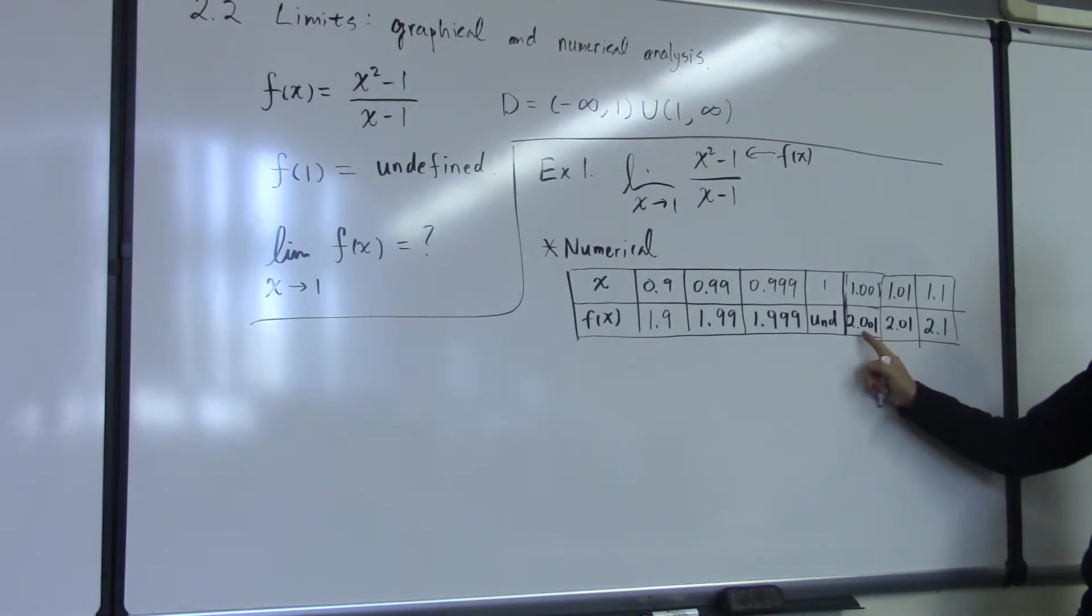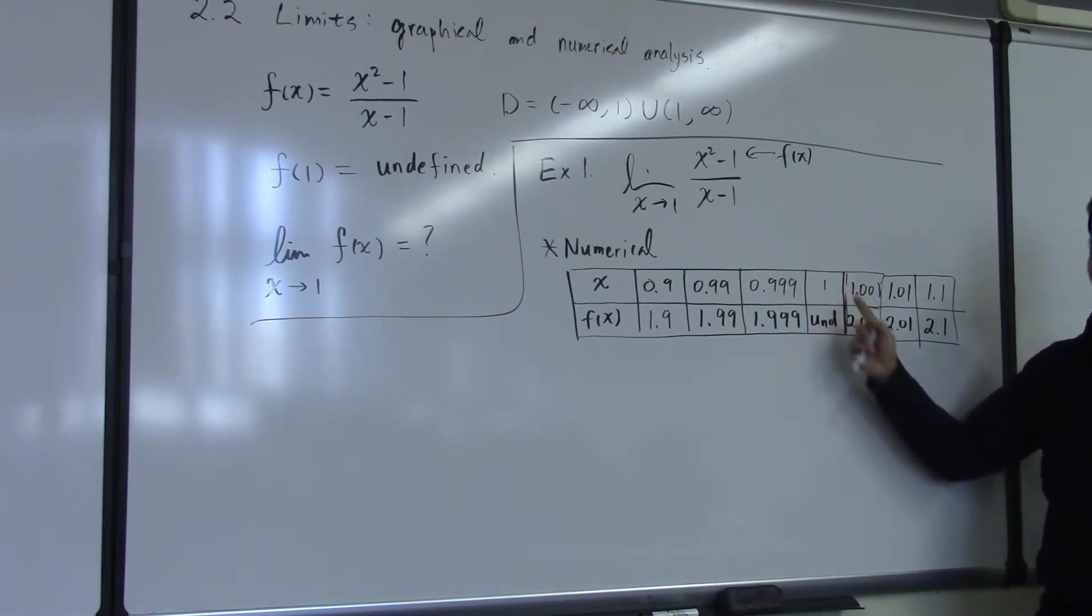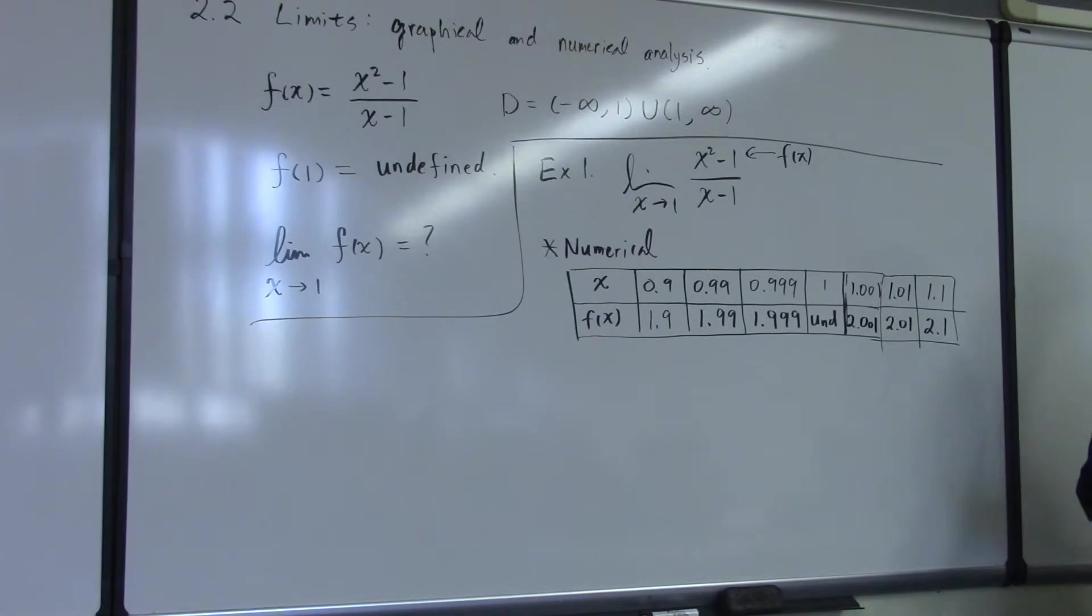On the right side, it's the same thing. 2.001 is closer to 2 than this one. And 2.01 is closer to 2 than this one. So you can see that near 1, near the x value 1, the function of x produces a number very close to 2. That's what we observe.